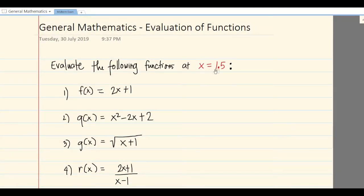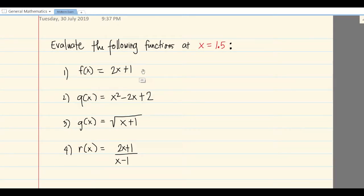At x equals 1.5, so example number one, step number one is copy the function. f(x) = 2x + 1. Then you will erase the x and replace it with 1.5, whatever is given you will substitute.